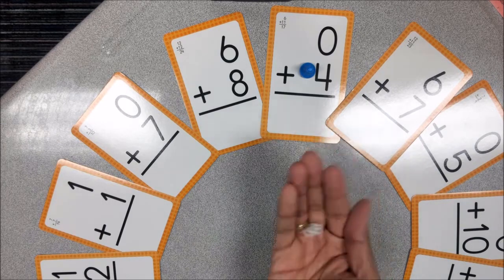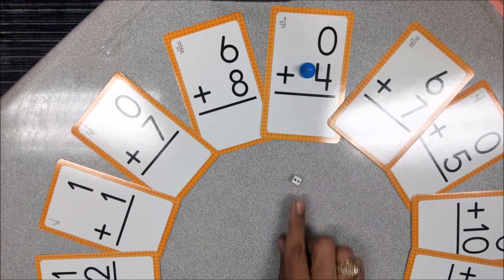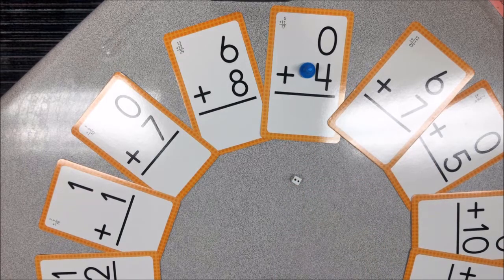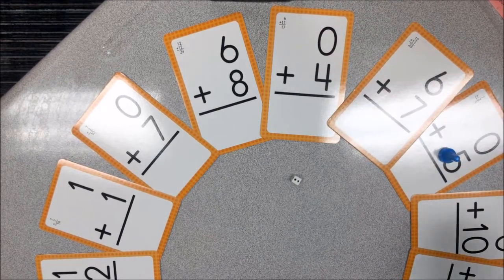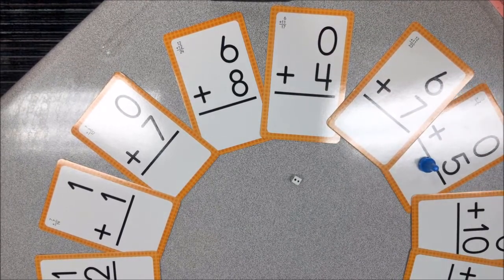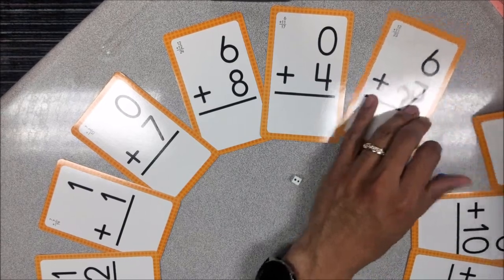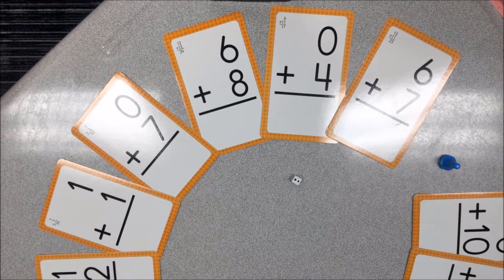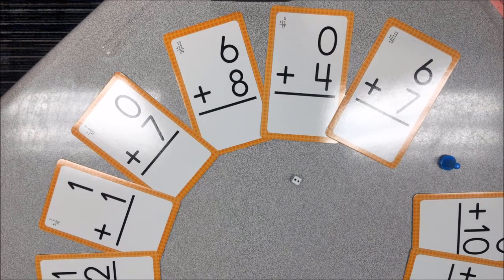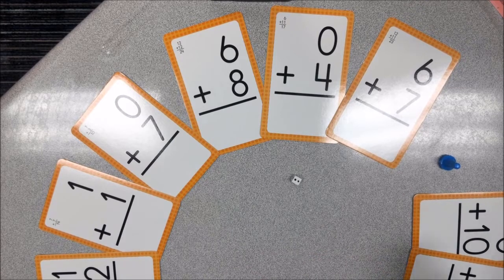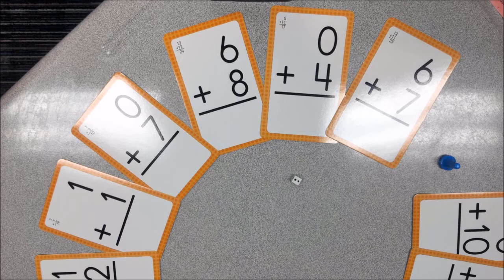And then they'll take turns rolling the die and move however many spaces show up on the die. So I rolled two so I get to move my game piece two spaces and I have to answer whatever card I land on. If I answer it correctly I get to keep the card. If I don't answer it correctly I skip my turn and then the next person goes. Whenever all the cards get picked up around the circle then whoever has the most cards at the end of the game wins.